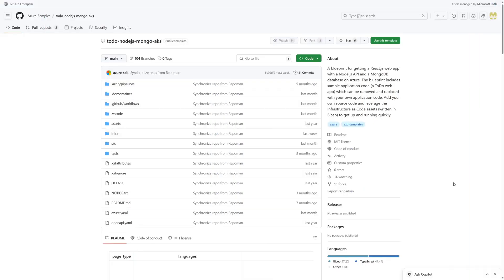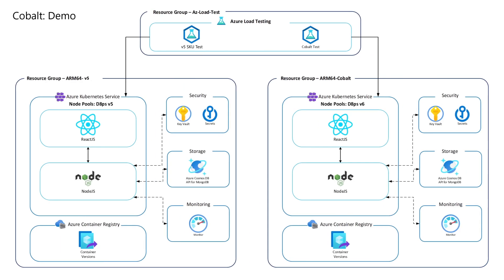To get started, I'll use the to-do application sample from the official Azure Samples GitHub repository. This application uses multiple Azure services like Cosmos DB, Azure Container Registry, Azure Monitor, Azure Key Vault, and Azure Kubernetes Service, which hosts the version 5 and version 6 Cobalt node pools running the React and Node.js workloads.